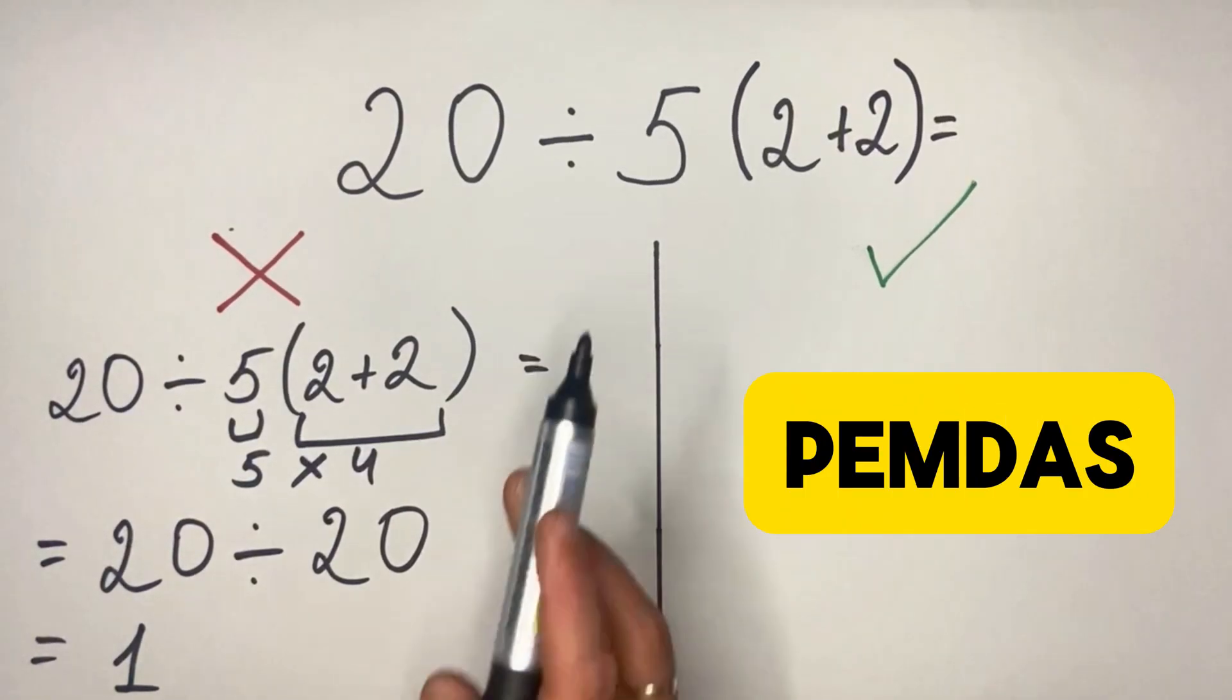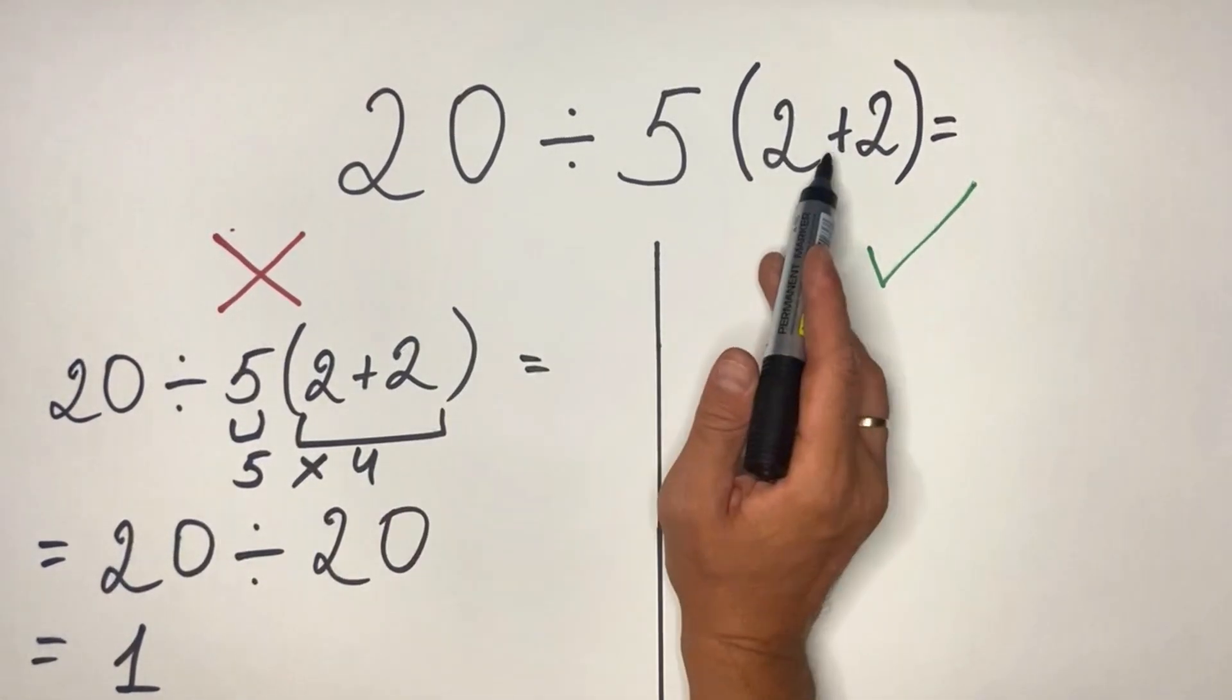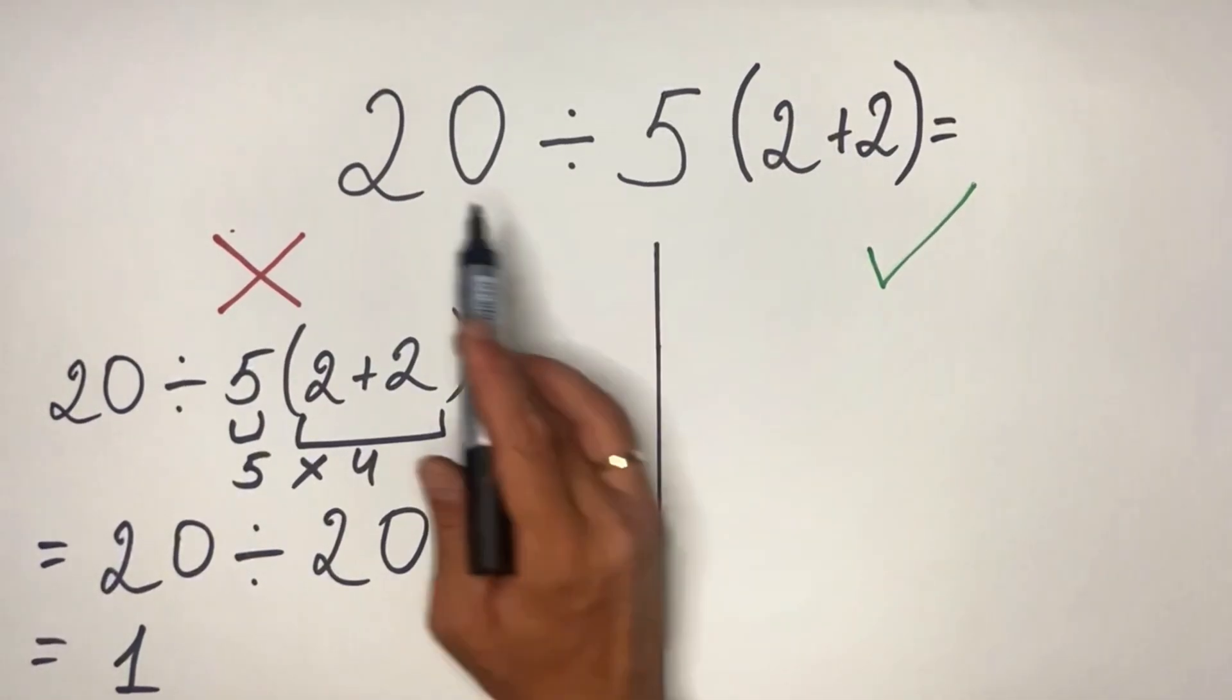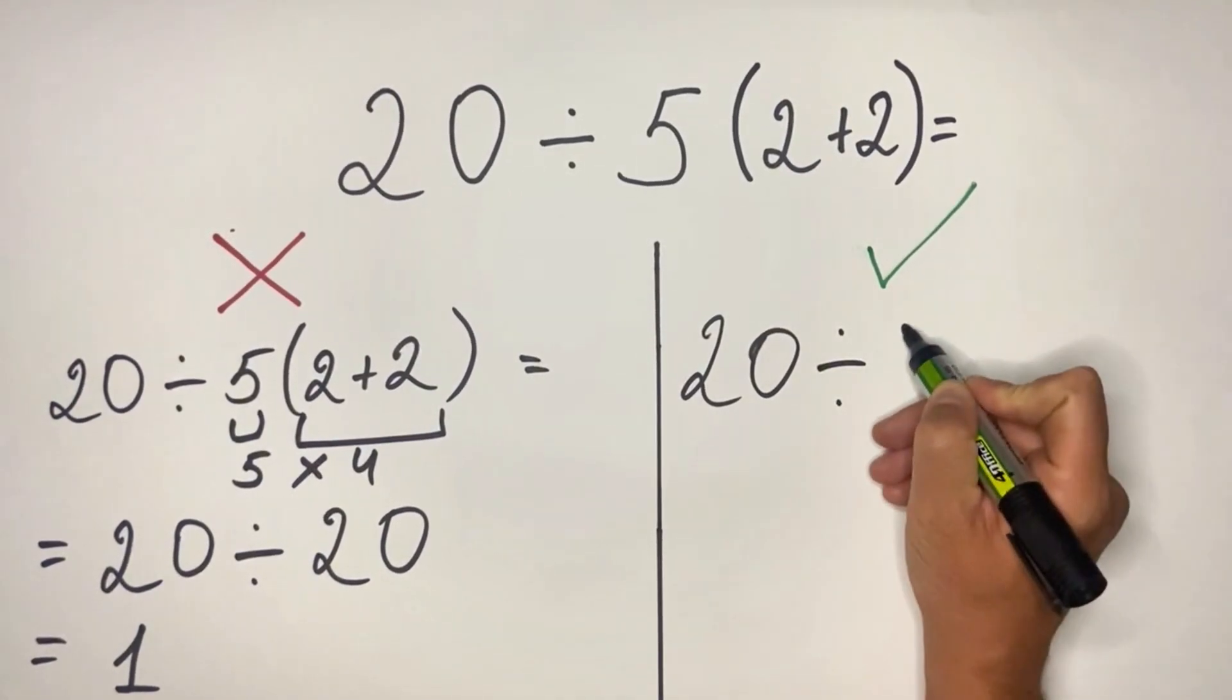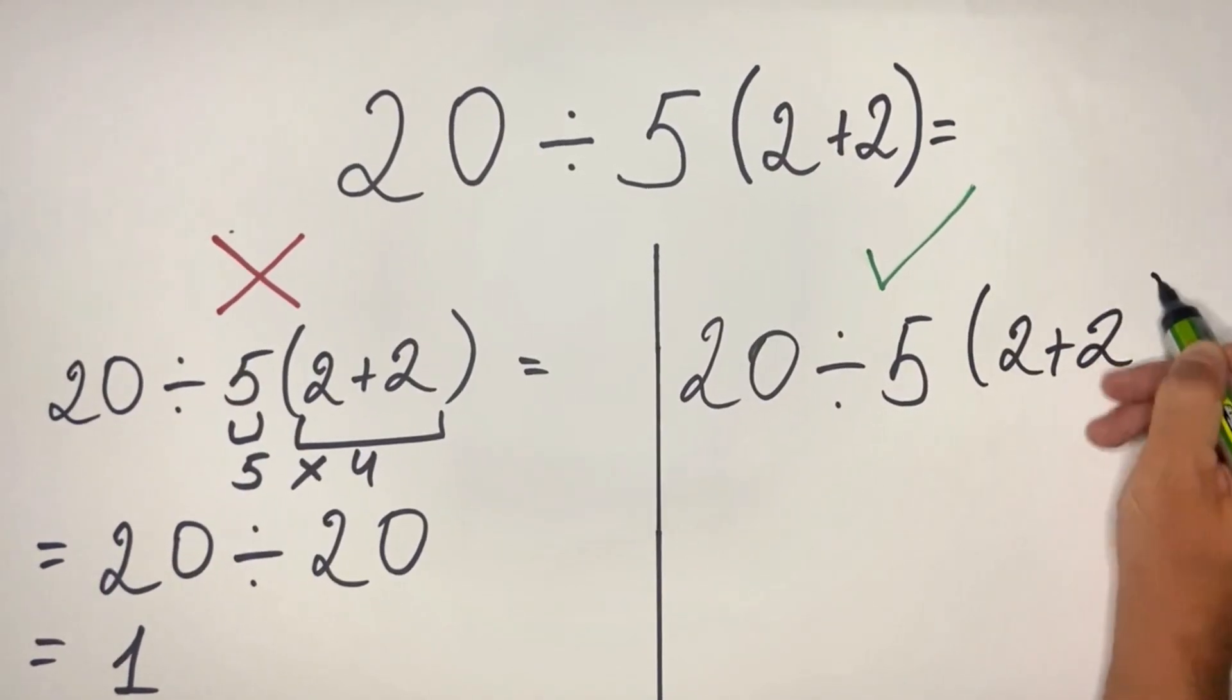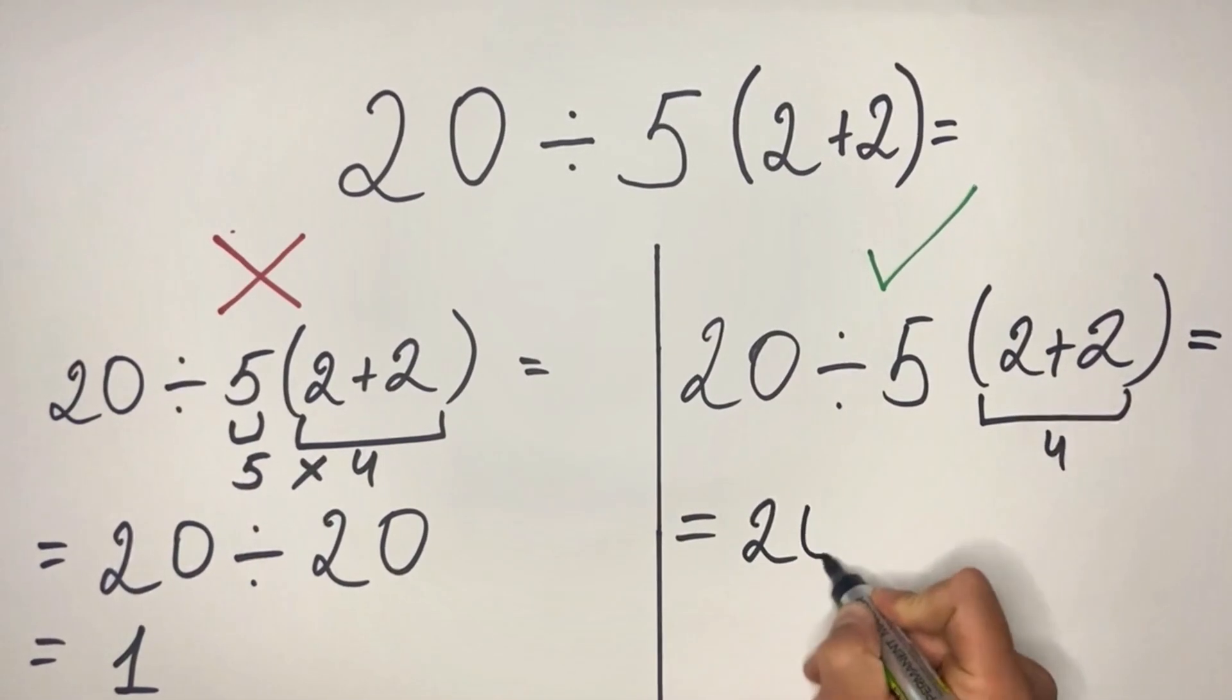So the correct answer should be as follows: First, you do that addition in parenthesis, so 2 plus 2 equals 4. Then you go from left to right. In this case, we have 20 divided by 5, so we just repeat it again because here we have 4.